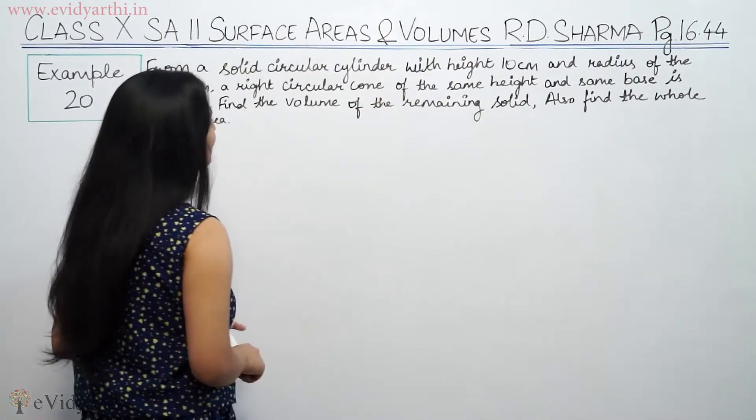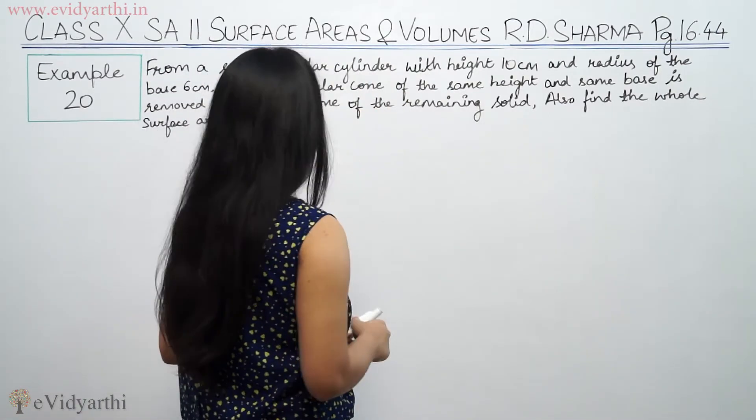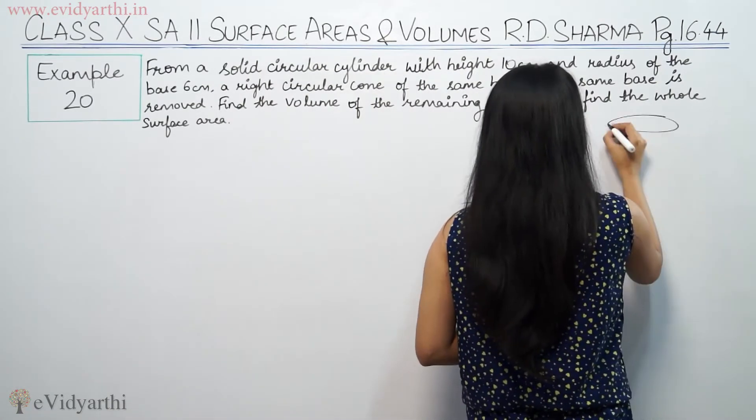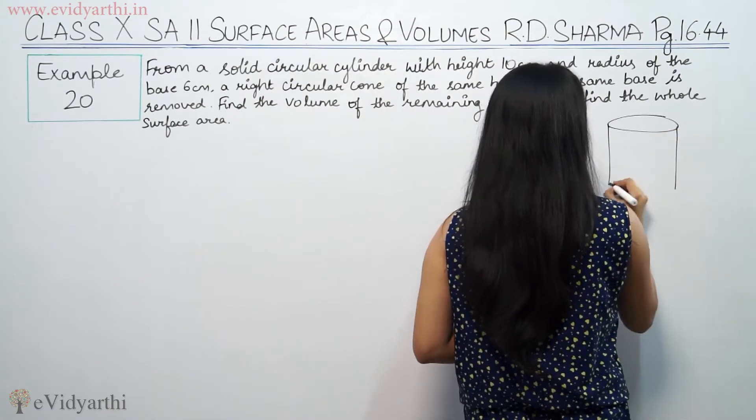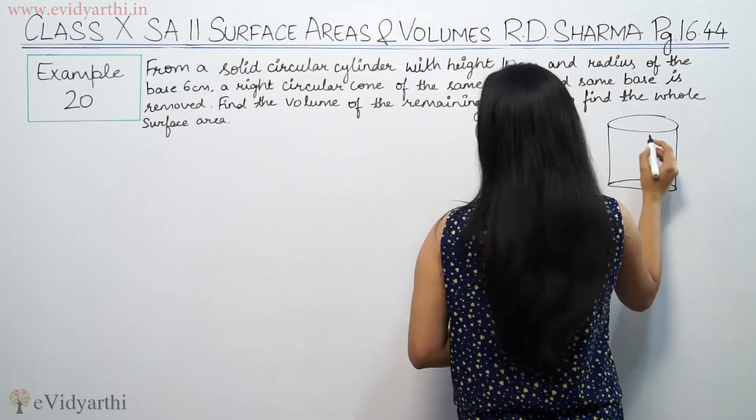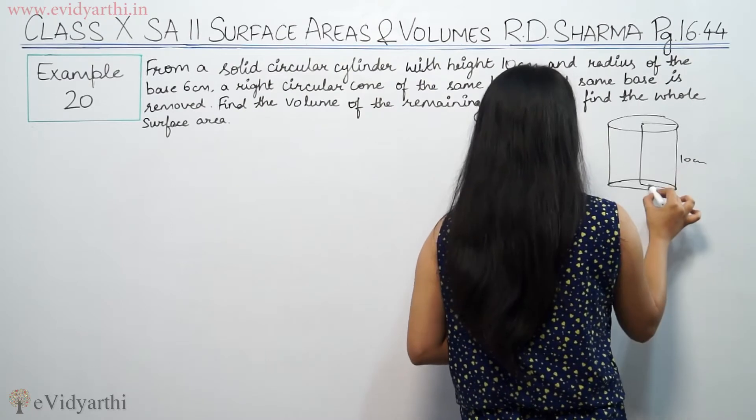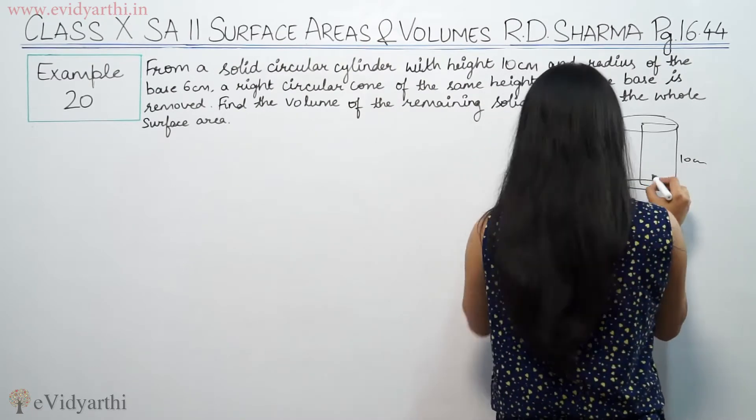We have a right circular cylinder with height 10 cm and radius of the base 6 cm.